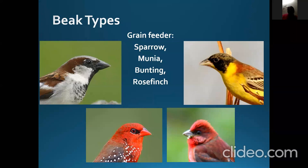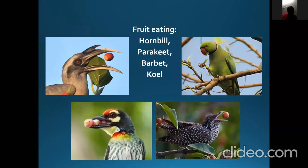Granivorous birds like sparrows, munias, buntings, and roasters eat grains, cereals, and grass seeds. Then there are birds which eat a lot of fruits, like the barbets, parakeets, koels, and mynas. Even among fruit-eating birds there are so many types of beaks. The parakeet is an expert in digging out the pulp from a papaya or a custard apple, which the koel won't be able to do as expertly. The koel or myna has to eat the fruit whole — just swallow it. The parakeet is the only bird which can hold the fruit in its feet and then eat it.